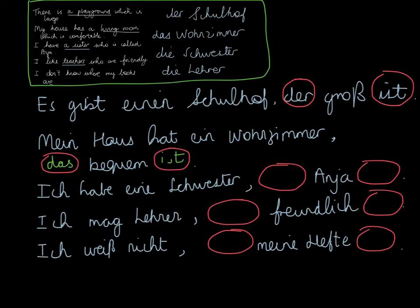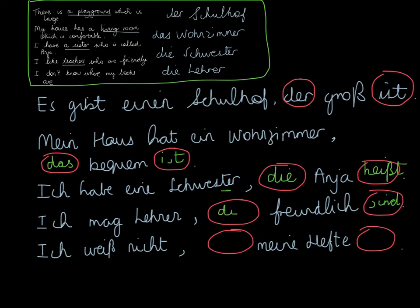Third sentence: I have a sister who is called Anja. The verb I'm going to need is heißt, and I put that at the end. The relative pronoun I'm going to need is die, because Schwester is feminine. Fourth sentence: I like teachers who are friendly. My verb is going to be sind, because that is 'are' in German. And the linking word I'm going to use is die, because teachers are plural — for plural I must use die.